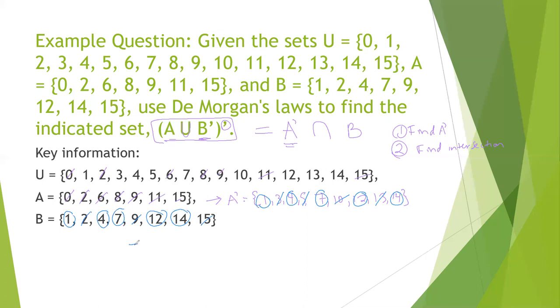So that means the elements that A prime and B share are 1, 4, 7, 12, and 14. And I'm going to clarify that I'm solving for A prime intersect B, which by De Morgan's law is the same as A union B prime and that whole quantity prime.